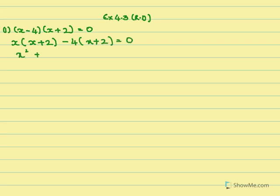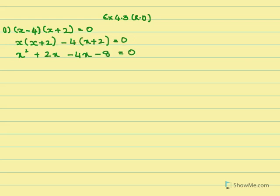So x into x gives x square, x into 2 gives 2x, minus 4 into x gives minus 4x, and minus 4 into 2 gives minus 8, equals 0. Now we collect the x square term and combine the like terms: x square minus 2x minus 8 equals 0.